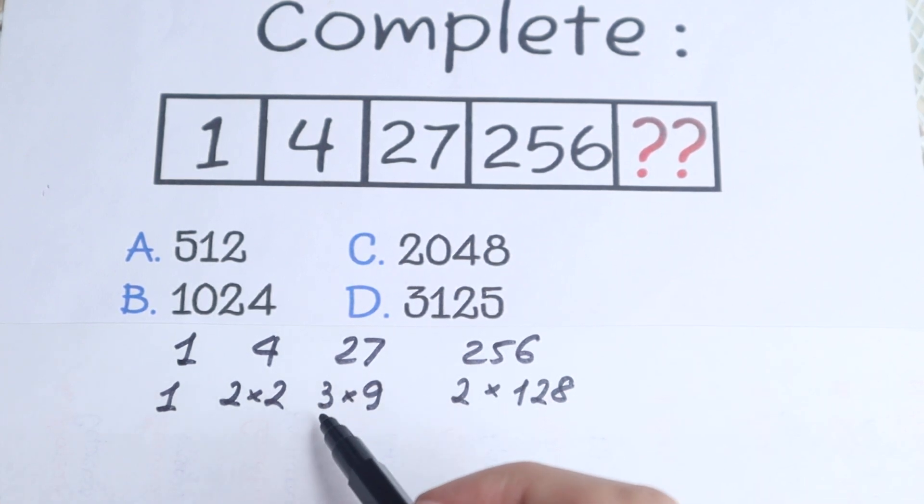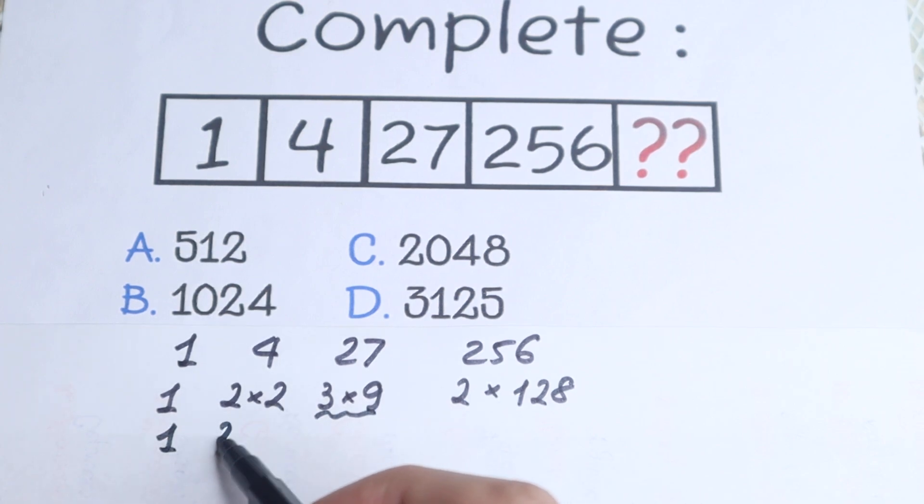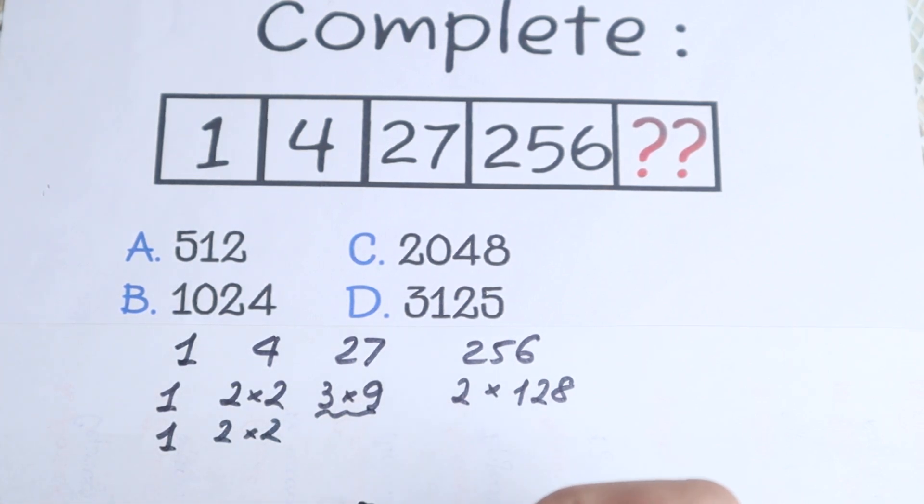Let's try to simplify this expression because 1, this is really good, 2 times 2, this is really good. We cannot simplify this more. But if you look a little bit right here, we have like 3 times 9. We can write this as 3 times and 9 can be written as 3 times 3. OK? So as you can see right here, we have a really good pattern. 1, 2 times 2, 3 times 3 times 3, which is really great.